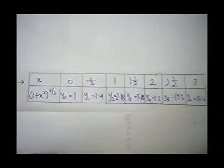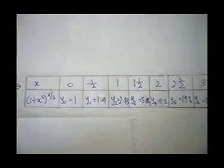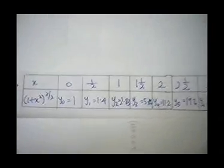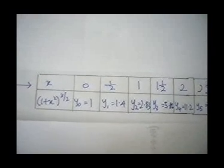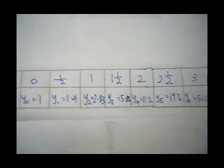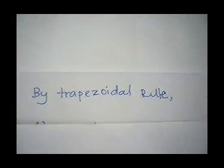In the following step, we have to draw a table. Since h equals one half, our x values increase by one half up to the maximum limit of 3. Then we substitute each value into (1 plus x squared) to the power 3 over 2, and we will get y0 to y6. Next, by the trapezoidal rule, we use the formula given in our course book and substitute the values in.